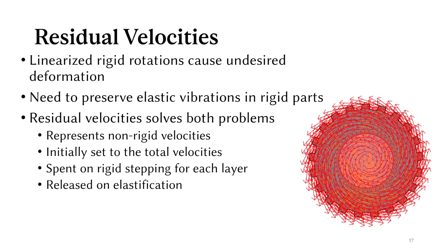Initially, residual velocity encompasses the full mesh velocities, we use them to build and step our rigid bodies. All the velocities that can be used for a rigid step, for a layer, get deducted from the residual velocities. The leftover residual velocity gets passed down to the next layer.